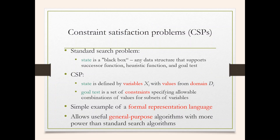The constraint satisfaction problem, or CSP — how is this type of problem different from the standard search problem? Those are the earlier search techniques we have already discussed. In the standard search problem, the state is a black box: any data structure that supports a successor function, heuristic function, and goal test belongs to the standard search problem.